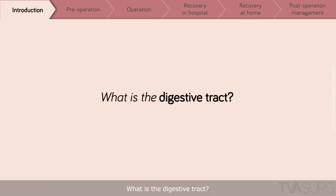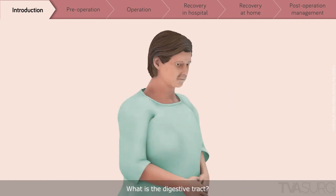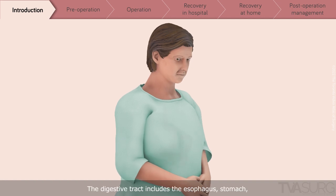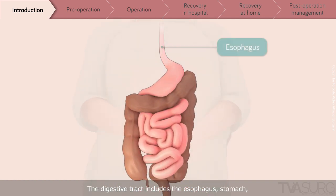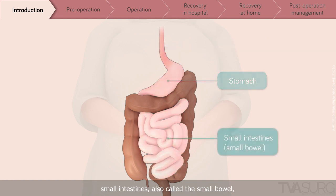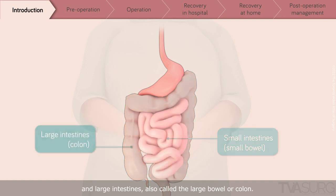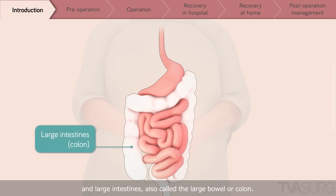What is the digestive tract? The digestive tract includes the esophagus, stomach, small intestines, also called the small bowel, and large intestines, also called the large bowel or colon.